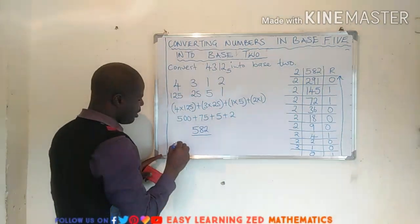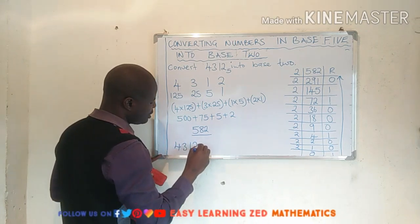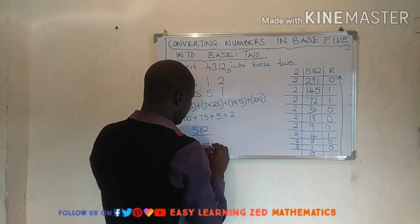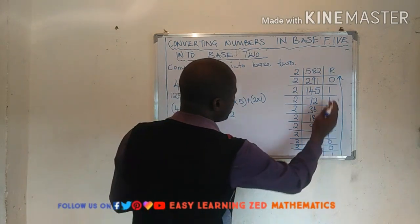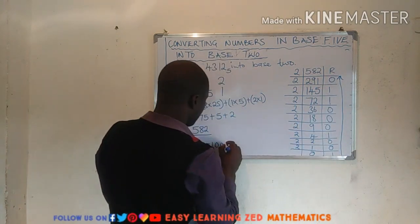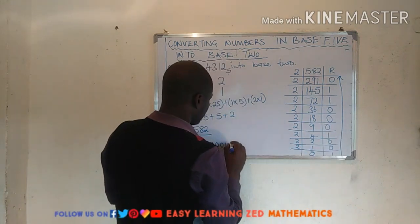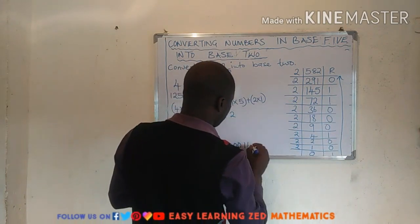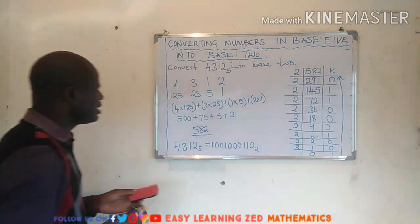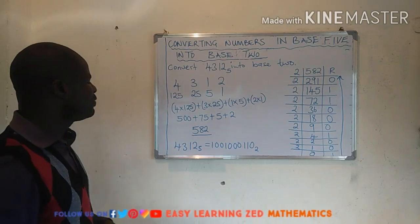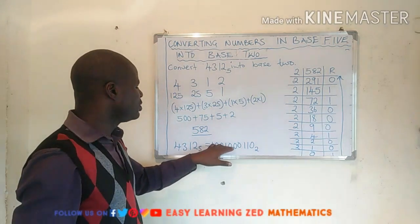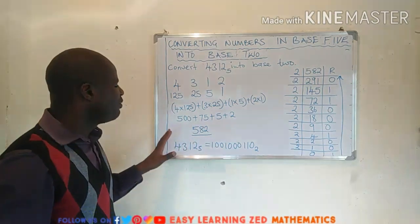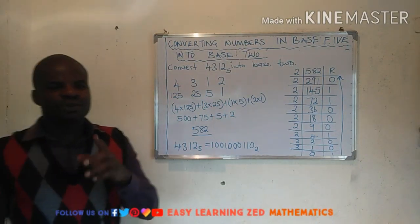So 4312 base 5 is equal to 1001001010 base 2. So this is how you convert numbers in base 5 into base 2. Thank you so much for watching.